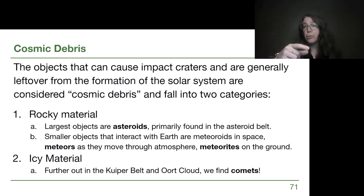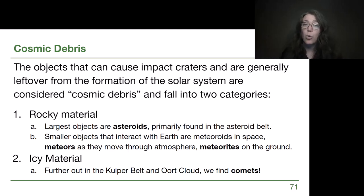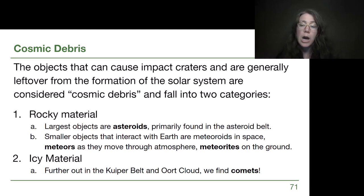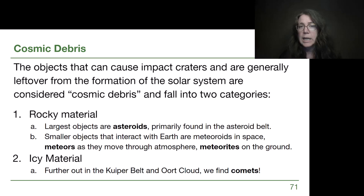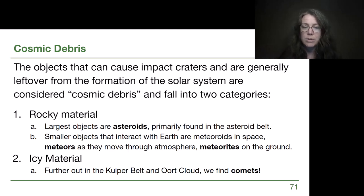Meteor is for when an object is streaking through our atmosphere. If you've ever seen a meteor shower or a single shooting star, that is a meteor. The object that hits the ground—that we could pick up and put into a museum or collection—is a meteorite. That term implies it has already interacted with Earth and made it to the ground.